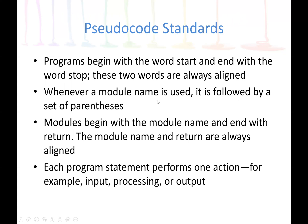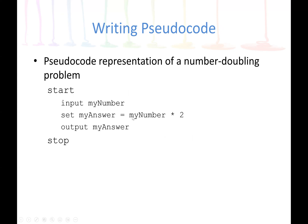Whenever a module name is used, it is followed by a set of parentheses. Modules always begin with a module name and end with 'return', and the module name and return are always aligned. Each program statement performs one action — for example, input, process, or output. Here in the pseudocode, the process is to set a variable to some specific number; in this case, we double it by multiplying the input by two. So the process is 'myAnswer = myNumber * 2', the input is 'myNumber', and the output is the result.